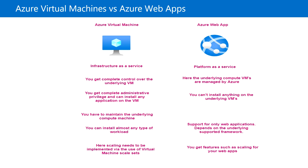With the Azure virtual machine we have to maintain the compute machine ourselves, whereas with Azure web app it is managed by Azure. We can install almost any type of workload on the Azure virtual machine since it is managed by ourselves, but Azure web app supports only web applications, depending on the underlying supported framework.